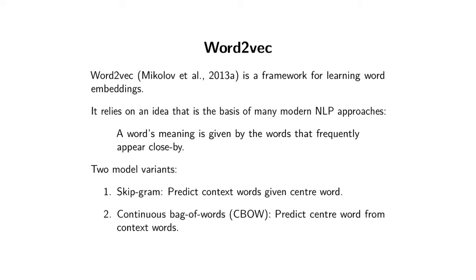The first word embedding approach that really gets away from the one-hot encoding problem is called Word2Vec. This is a framework introduced in 2013 that took the natural language processing community by storm. It looks a little bit like a neural network, but we can think about it without talking about neural networks. It relies on the basic idea that a word's meaning is given by the words that frequently appear close by — words that go together belong together. Word2Vec is based on this principle.